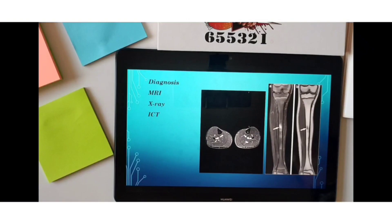Doctors diagnose shin splints by obtaining a history and examining the patient. Your doctor will look at your gait, how you walk, and examine your lower leg, ankle, and foot. A complete exam will involve moving your ankle and foot around, feeling for tenderness along the bone, and standing or hopping on the painful leg may help diagnose shin splints or a stress fracture. The doctor may order X-rays, MRI, or a bone scan, as these tests can detect injury before an X-ray alone.